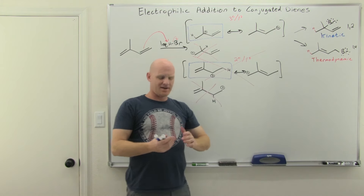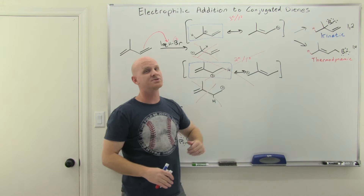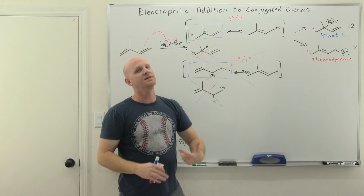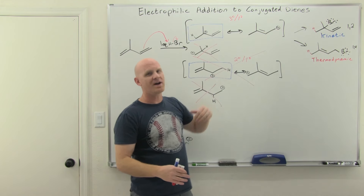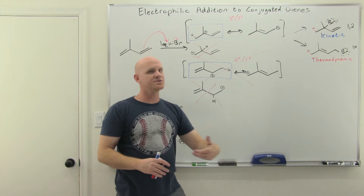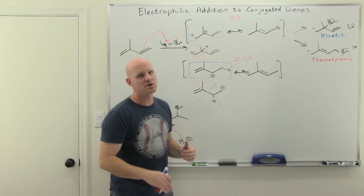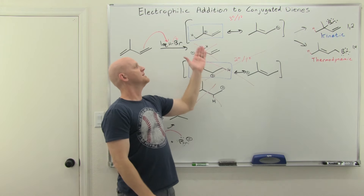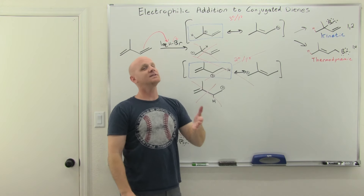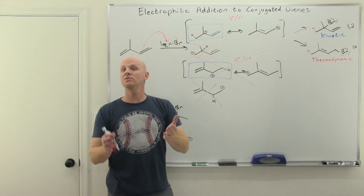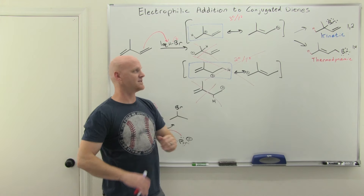You could say that whichever resonance structure represents the more stable carbocation — the major resonance contributor — attacking that carbon leads to the kinetic product. That's not exactly how we should think about it mechanistically, but it's a useful shortcut. So the 1,2-product is the kinetic product here, formed by bromide attacking the tertiary carbon bearing more of the positive charge.